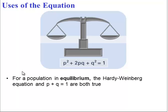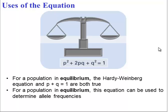First of all, it's important to note that for a population in equilibrium, both the Hardy-Weinberg equation and the simpler equation, p plus q equals 1, are both true. So, if we have a population in equilibrium, we can use these two equations to determine allele frequencies.